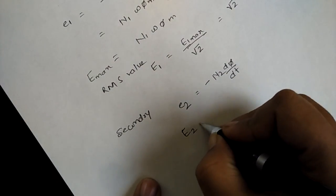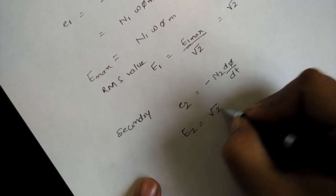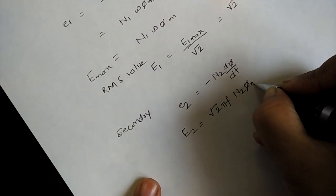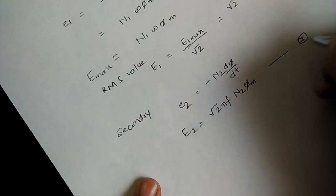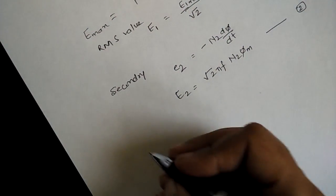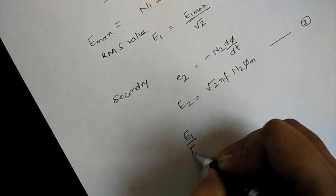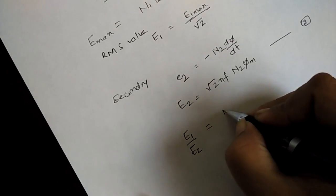And if you derive the same equation, you will get the RMS value for this as root 2 pi f n2 into phi_m. This is your second equation.